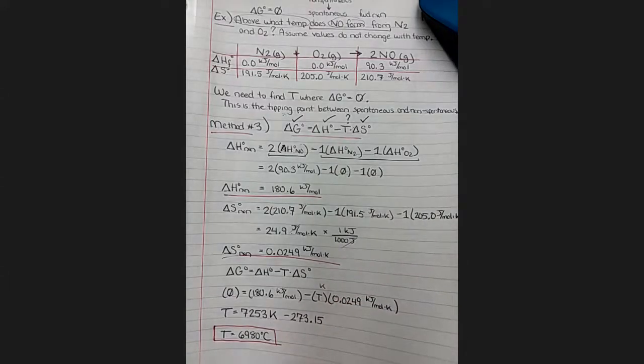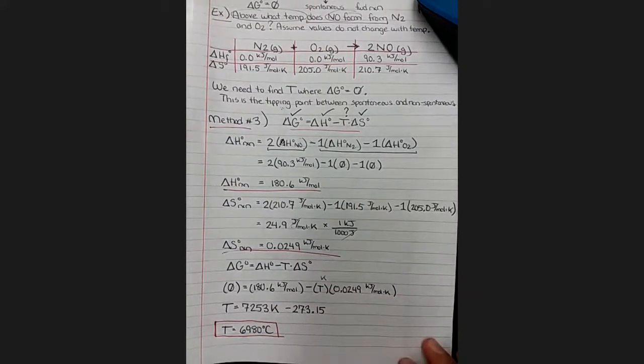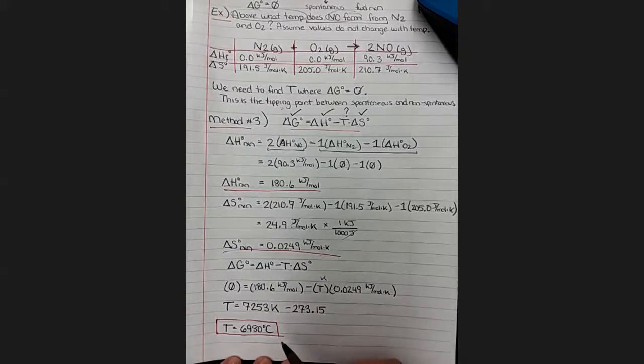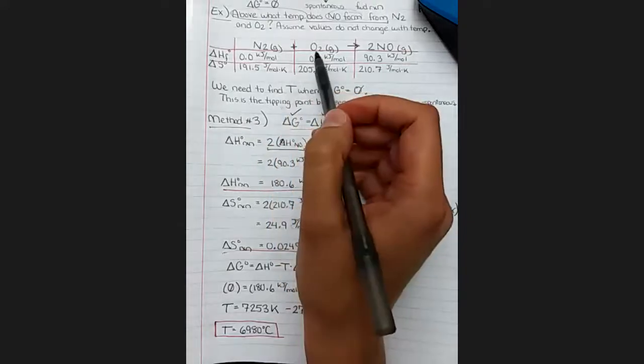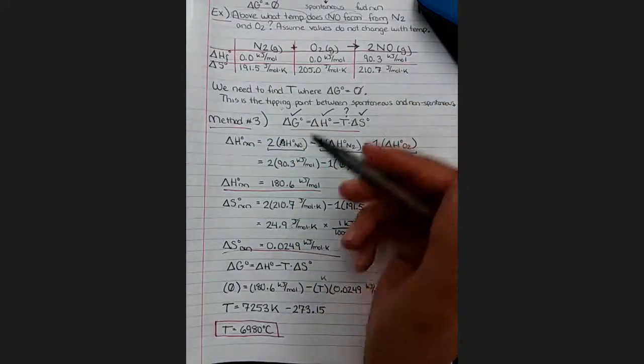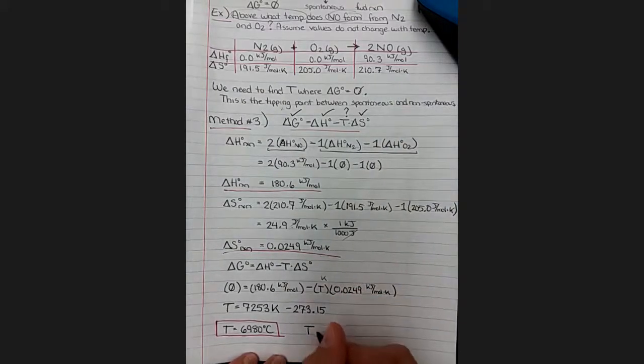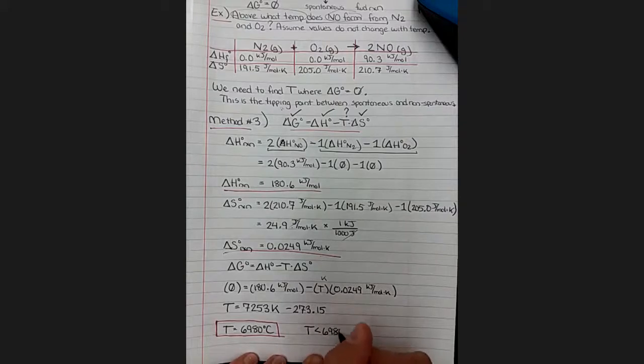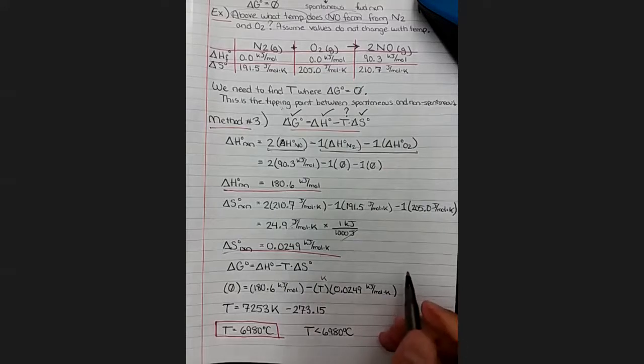And I end up with the same number. So that's still kind of confusing. I checked my math and I still end up with this ridiculously high temperature. So let's go back and think about the reaction we're talking about: nitrogen plus oxygen goes to NO. So if we have a really huge temperature, what does that mean?